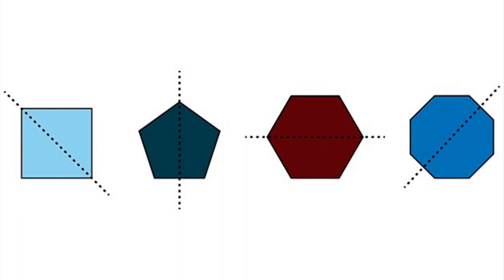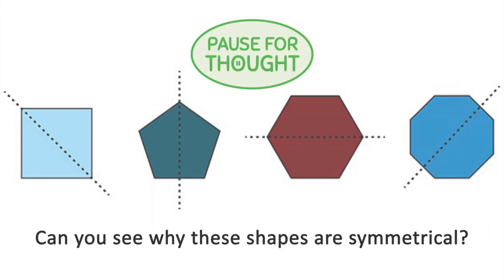When a shape can be split into halves that look the same, we say it is symmetrical. Can you see why these shapes are symmetrical?